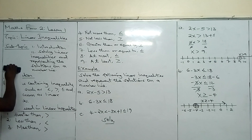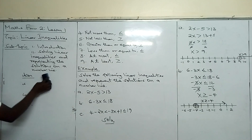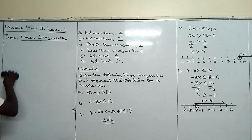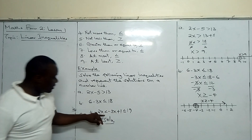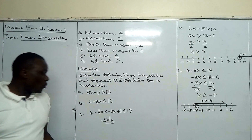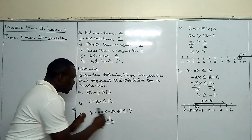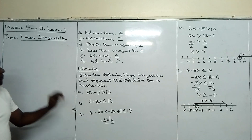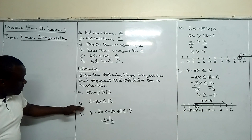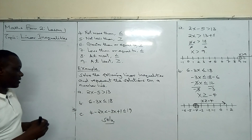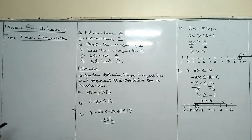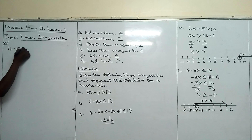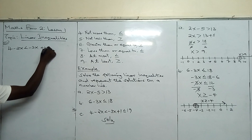Let us look at number C. In C, if you look at it, we have more than one inequality symbol — first less than, then less than or equal to. When a given equation has two inequality symbols, it means you are going to have two linear inequalities. We have: 4 minus 2x, less than, minus 3x plus 1, less than or equal to 19.